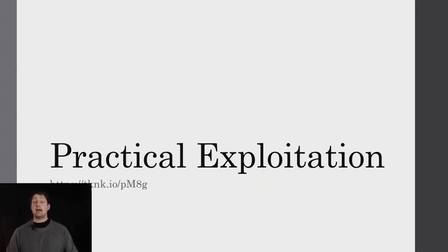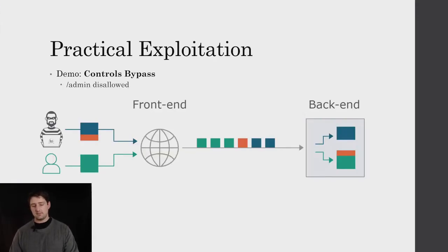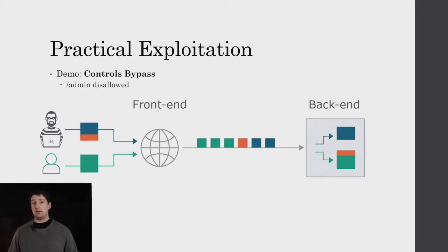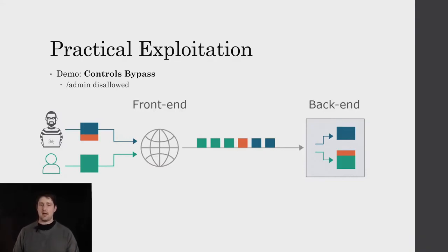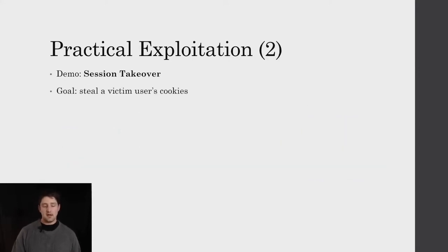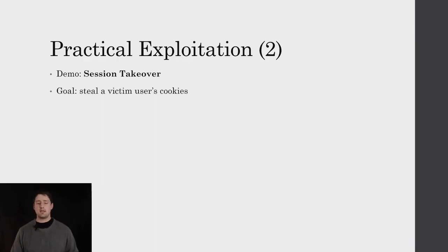Let's get into practical exploitation. There are four demos available to download — I'll give you the link later, it's a zip file on the web server. Demo number one is a controls bypass. In this example, there's a front end and a back end, and the front end disallows access to the /admin endpoint. If there is an HTTP smuggling or desynchronization vulnerability between the front end and back end, it is possible to bypass this control and access the administrative portal from the internet. Demo number two, since we're running low on time, is a complete session takeover.